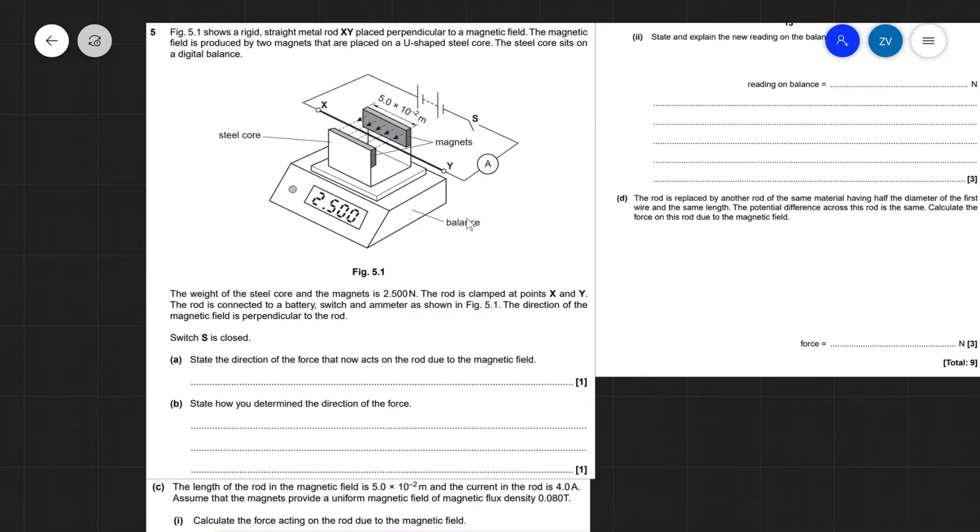We know current will be flowing from x to y because this terminal here is the positive terminal, this here is the negative, this here is the positive, this here is the negative. So we're going to have current flowing in this direction, so I will be going from x to y.